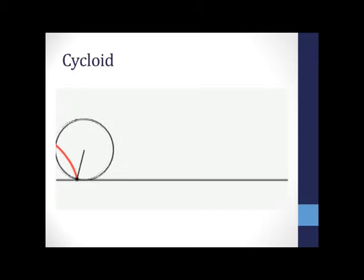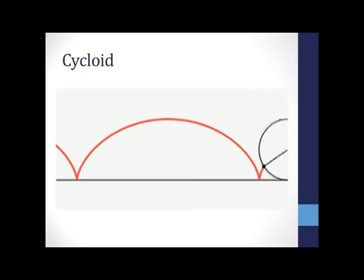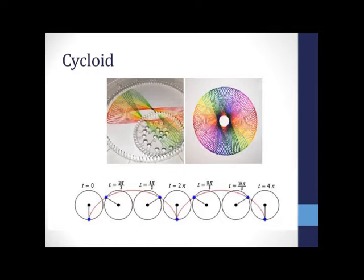Our next example involves a curve called a cycloid, which aside from being an interesting curve will help us show another important property of parametric equations. The cycloid is made by following the path of a point on a circle as the circle is rolled along a linear path. If you've ever played with a spirograph as a kid, you'll have seen many variations on this pattern.